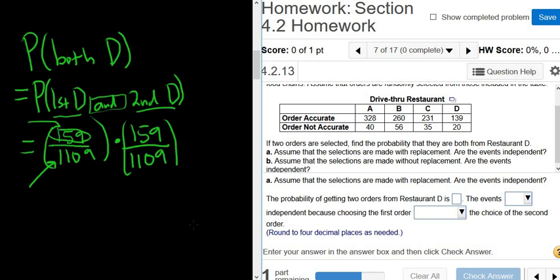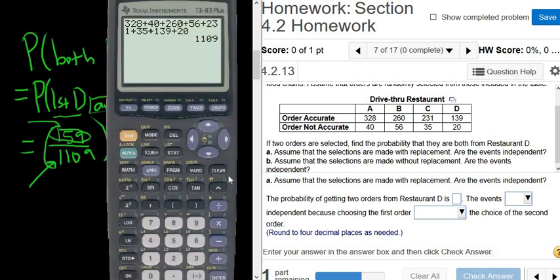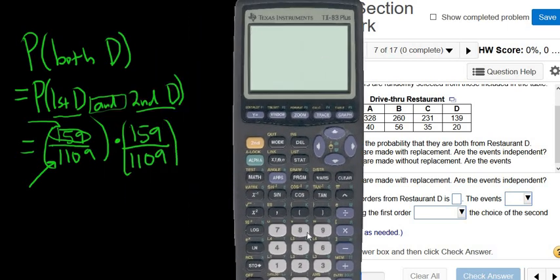So putting this in the calculator, and now I can show you how to do that. So when you put it in, you can put it in just like it's written. 159 divided by 1109 times, and then again the parentheses are important, 159. You could have just squared this quantity, but I wanted to just keep it the same as you see it written down here. And it looks okay, let's hit enter.